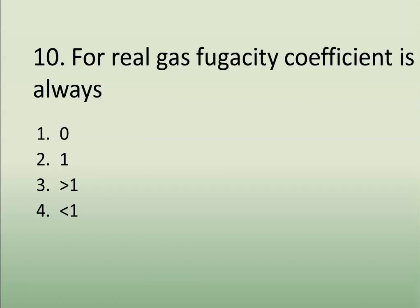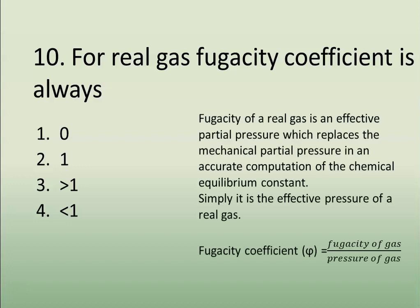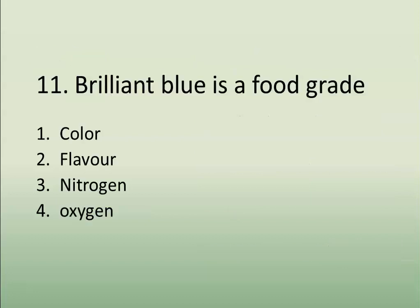Question number ten: For a real gas, the fugacity coefficient is always — options are zero, one, greater than one, or less than one. Fugacity of a real gas is an effective partial pressure which replaces the mechanical partial pressure in an accurate computation of the chemical equilibrium constant — it is simply the effective pressure of a real gas. The fugacity coefficient is defined as the ratio of fugacity of gas to pressure of gas. And the correct answer is less than one.